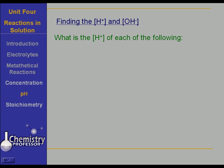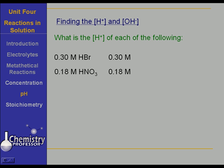Now let's see what the hydrogen ion concentration is for each of the following. Suppose we have a 0.3 molar hydrobromic acid solution — that is a strong acid — so we have a 0.30 molar hydrogen ion concentration. What about a 0.18 molar nitric acid? That is a strong acid also, so the concentration of the hydrogen ion is also 0.18 molar.